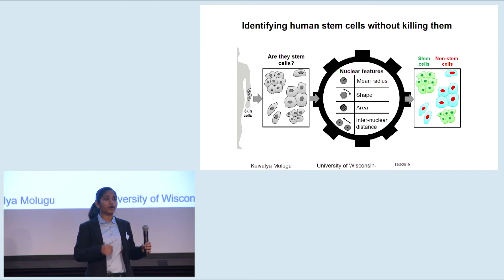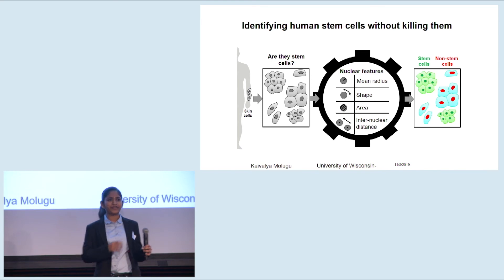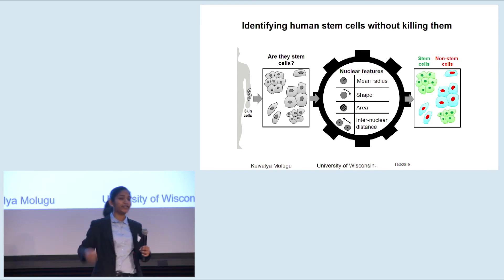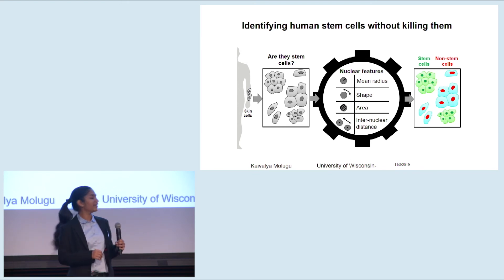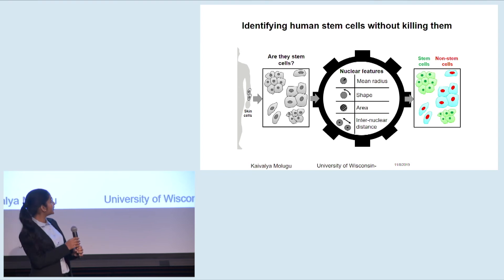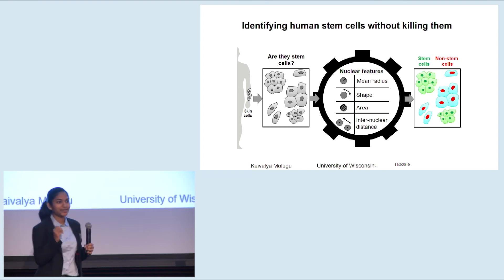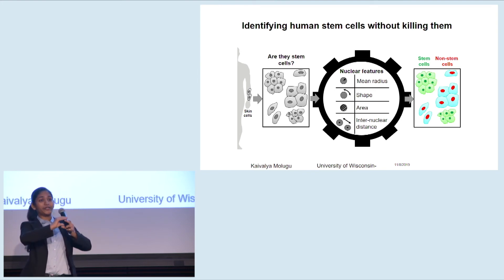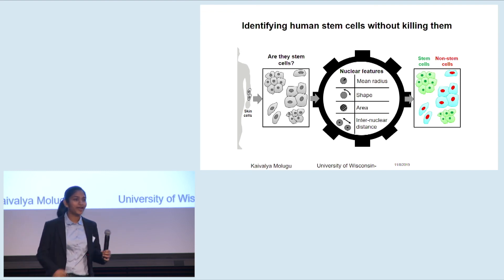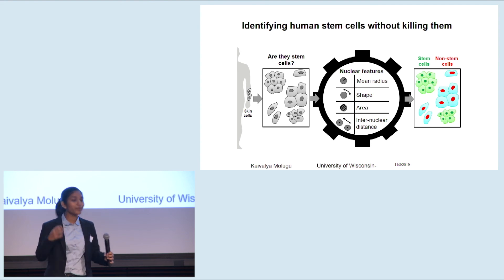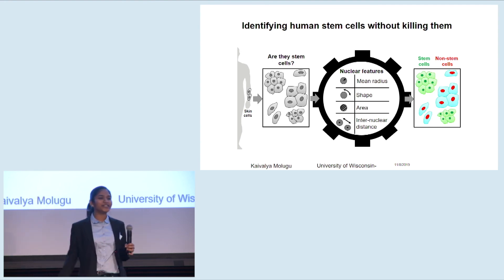We took pictures of skin cells undergoing reprogramming to stem cells and measured various features of the nucleus — like area, perimeter, shape, and internuclear distance. As you can see from my slide, stem cells had smaller and circular nuclei that were close together, while skin cells had larger and elongated nuclei that were far apart. Based on these nuclear features, we could tell if a given cell was a stem cell or not.